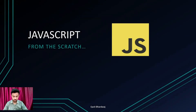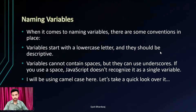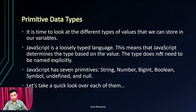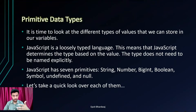Hi everyone, this is Ipsit Bhardwaj and welcome to another lecture of JavaScript from scratch. In today's lesson, we're going to take a look at primitive data types. Note that JavaScript is a loosely typed language. This means that JavaScript determines the type based on the value. The type does not need to be named explicitly, and we will be understanding what this means in our upcoming sessions.